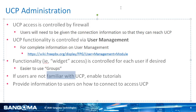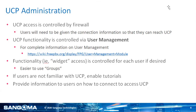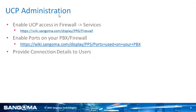First, you need to make sure you've set up your firewall so that users can actually get access to the UCP. We're going to look at what settings are needed from a firewall perspective for your PBX to enable your users to connect to the user control panel. You have to enable certain ports that the UCP uses, and then you'll be able to provide that connection information to your users. For additional information on setting up the firewall and UCP as a service, there's a link provided.